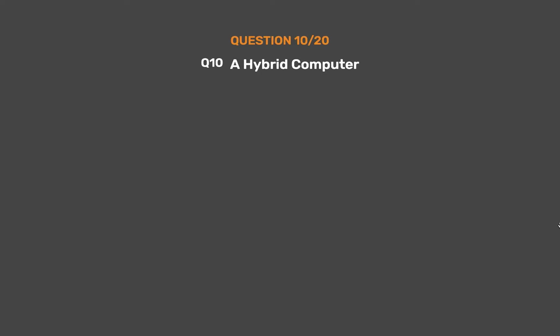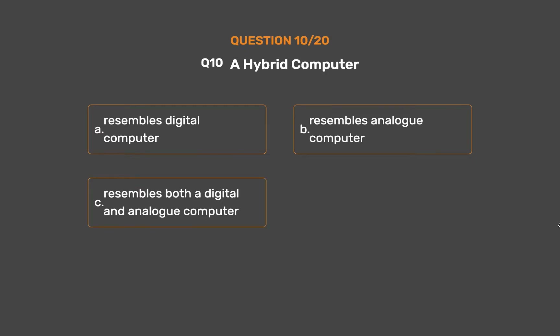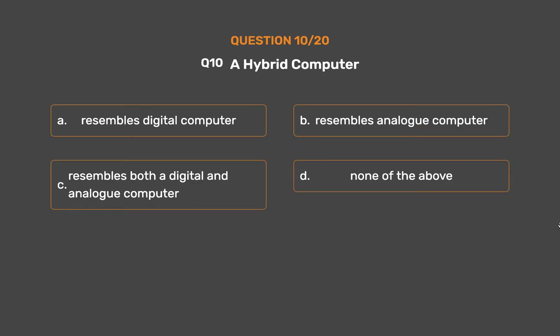Question number 10. A hybrid computer: Option A: Resembles a digital computer. Option B: Resembles an analog computer. Option C: Resembles both a digital and analog computer. Option D: None of the above.